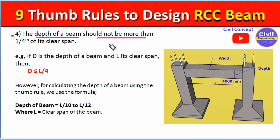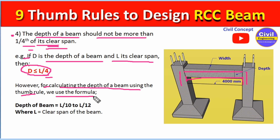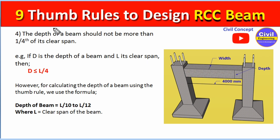Point number four: the depth of the beam should not be more than one-fourth of the clear span (L/4). The clear span is the distance between the edges of the two supporting columns. According to the thumb rule, we calculate the depth of the beam as L/10 to L/12, where L is the clear span of the beam.